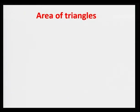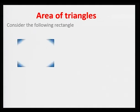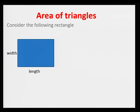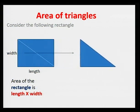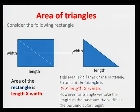Now let's see how to calculate area of triangles. First, let's have a look at this rectangle. The area of this rectangle is length times width. If I divide this rectangle into two equal parts, I will have a triangle. This triangle will retain the width and the length of the rectangle. This area is half of that of the rectangle. So the area of this triangle is half times length times width. We have obtained a formula here for area of a triangle.